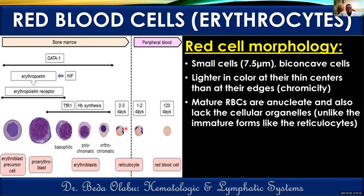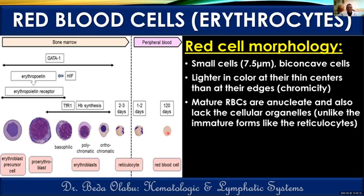Some reticulocytes enter the peripheral circulation, but we don't expect a lot of them there. A high reticulocyte count in peripheral circulation indicates the bone marrow is actively forming red blood cells. The lifespan of reticulocytes is about 1-2 days in peripheral circulation and 2-3 days in the bone marrow. Mature red blood cells — having lost nucleus and all organelles — have a lifespan of about 90 to 120 days in peripheral circulation.